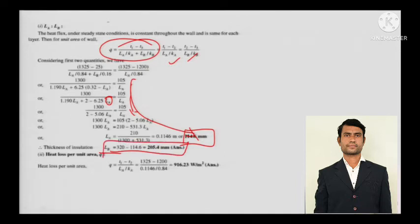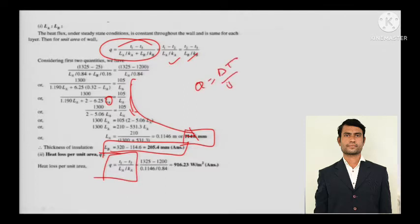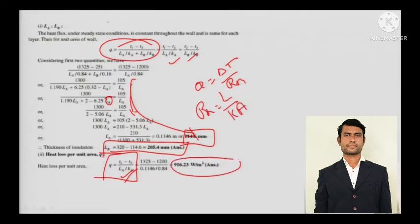For heat loss per unit area, you can take either the fire brick or the insulation part and just apply Fourier's law. Fourier's law gives Q equals delta T divided by RTH. For conduction, RTH equals L divided by KA. So here it is L by KA.